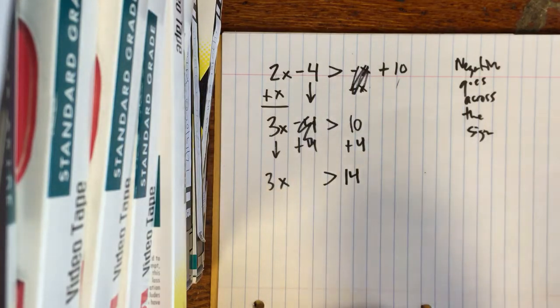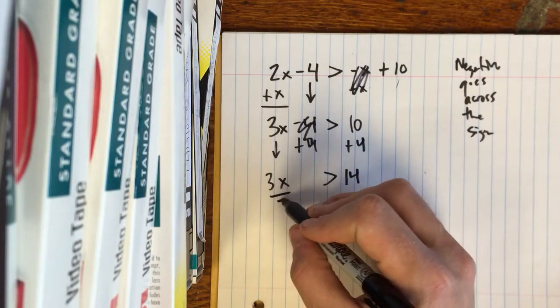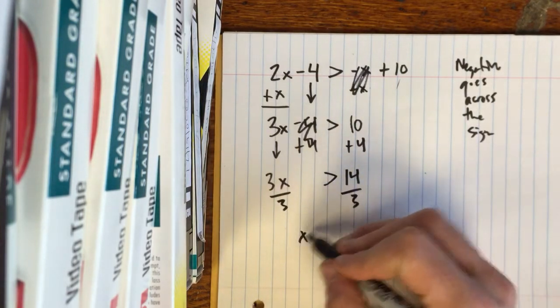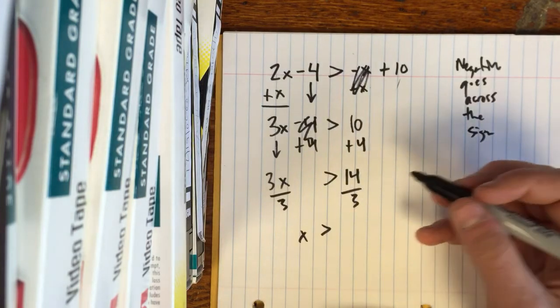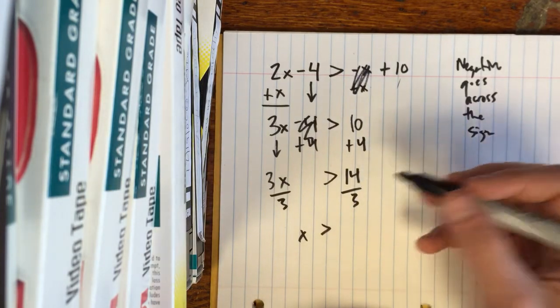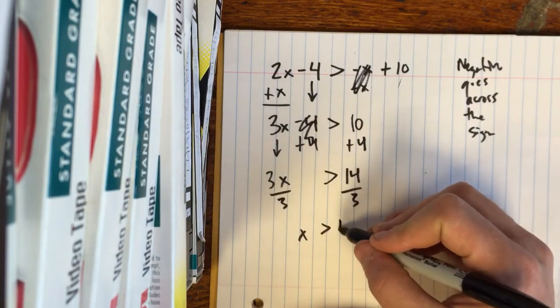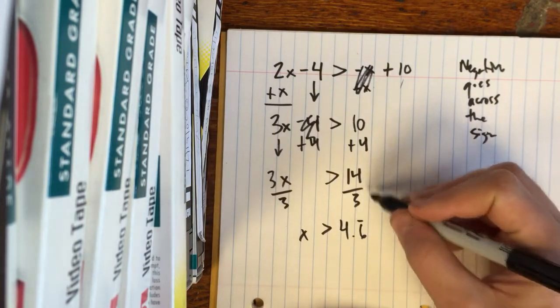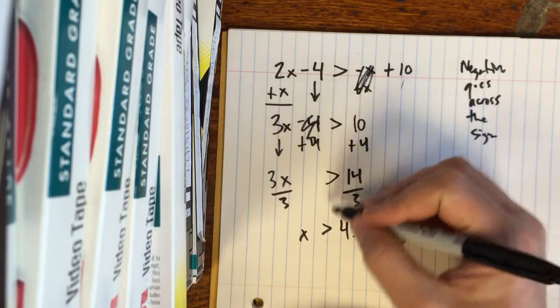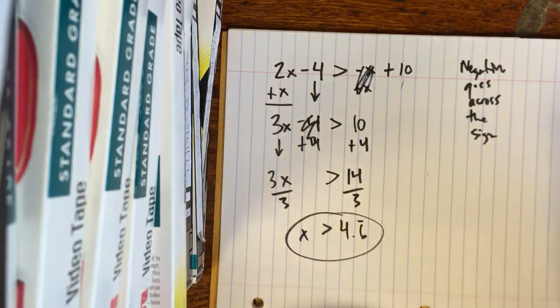And then it's 3 times X, so the opposite of multiplying by 3 would be dividing by 3. So X is greater than 14 over 3. That doesn't reduce. If you wanted to, you could put it as 4.6 repeating. Your teacher probably wants it as 14 over 3, but you found the answer.